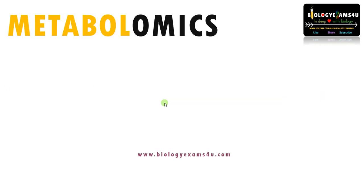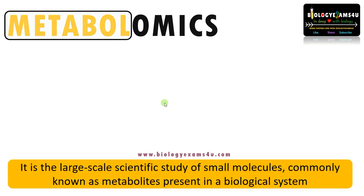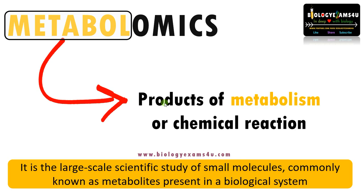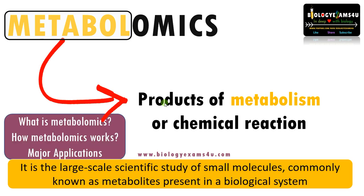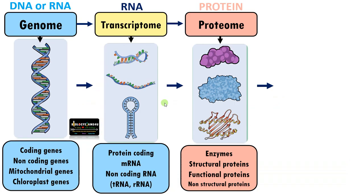Hi friends, hope you're fine. Let's begin with the term metabolomics. 'Metabol' means the products of metabolism, or the sum total of all chemical reactions happening within a biological system or a cell that keeps us alive. Metabolomics can be defined as a large-scale scientific study of small molecules produced as a result of metabolism in a biological system, including amino acids, sugars, lipids, etc. At the end of this video, you will be able to understand what metabolomics is, how it works, and what its major applications are.